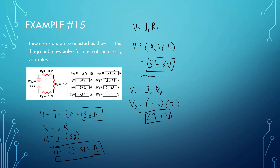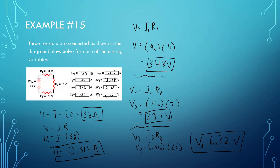So we have 3.48 and 2.21, which adds up to 5.69, and it needs to total 12 volts, so the next one should be around 6.5. V3 equals I3 times R3 — I3 is 0.316 and R3 is 20, so 20 times 0.316 gives us 6.32 volts. If we add 3.48 plus 2.21 plus 6.32, we get 12.01 — and because of the rounding, it's not exactly 12, but if we had rounded perfectly, it would have been 12.